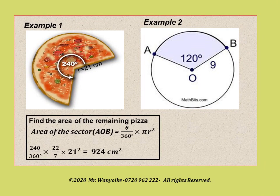Let us look at some examples. In example one, we have a pizza whose one part has been eaten away and this part is a sector. We can find the area of the remaining pizza using the formula theta over 360 times pi r squared. The angle of the remaining sector at the center is 240 degrees over 360 times 22 over 7 times the radius. The radius is 21 times the radius again. When you evaluate this, you get 924 centimeters squared.